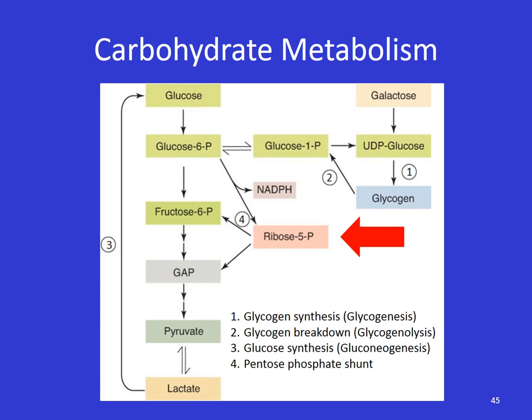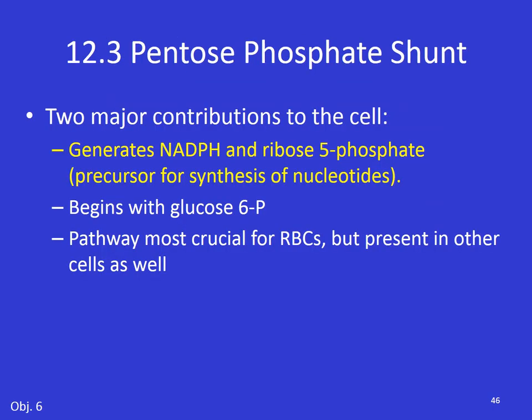Finally, let's do a quick review of the pentose phosphate shunt. We already know most of what we need about it. The pentose phosphate shunt has two major contributions: it generates NADPH, which is useful for anabolic processes, and it also generates ribose-5-phosphate, which is used for the synthesis of nucleotides. This begins with glucose-6-phosphate and is most crucial for red blood cells, because they lack mitochondria and therefore lack any other ways to get NADPH. But just because other cells have other ways doesn't mean they don't have the pentose phosphate shunt — it's present in other cells as well, just not as crucial.